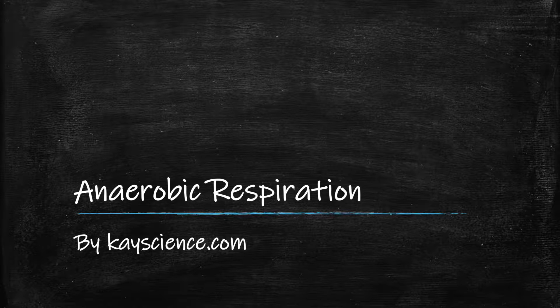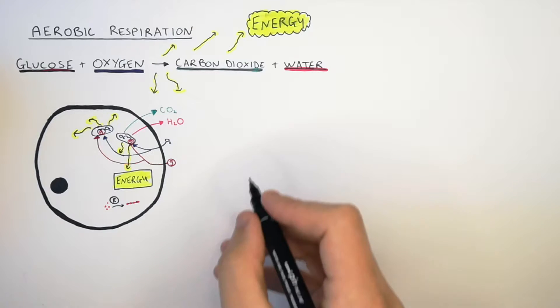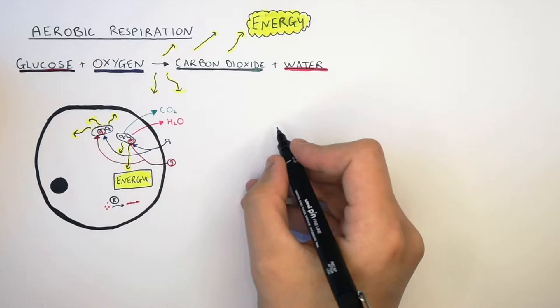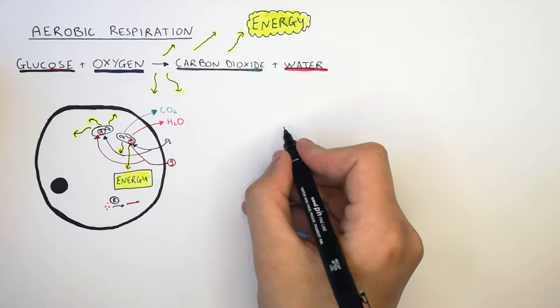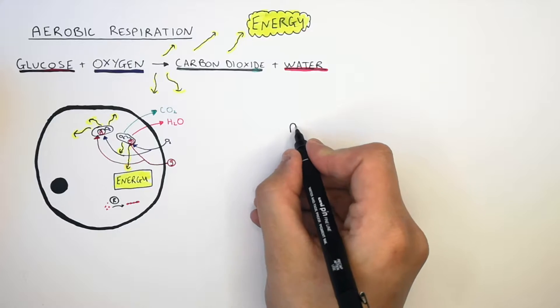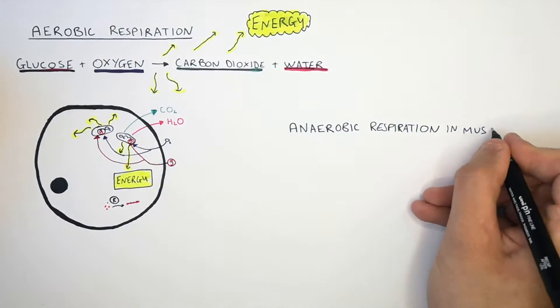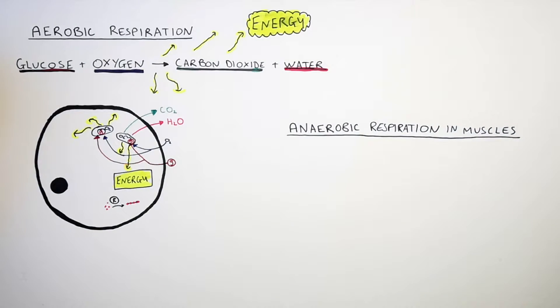Anaerobic respiration by kscience.com. Aerobic respiration is the complete combustion of glucose in the presence of oxygen. However, anaerobic respiration in muscles is slightly different.